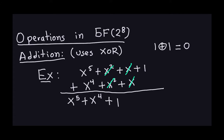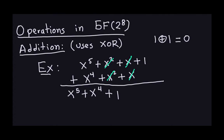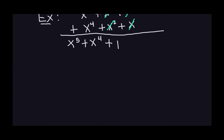Addition in the Galois field is almost exactly the same as polynomial addition, except you use XOR for the coefficients. An important property is that when you add two elements of the Galois field, the result is also in the Galois field — meaning it's a polynomial of degree seven or less with coefficients of zero or one. That's closure under addition. It's actually quite simple: a power added to itself just gives zero, so the term disappears.